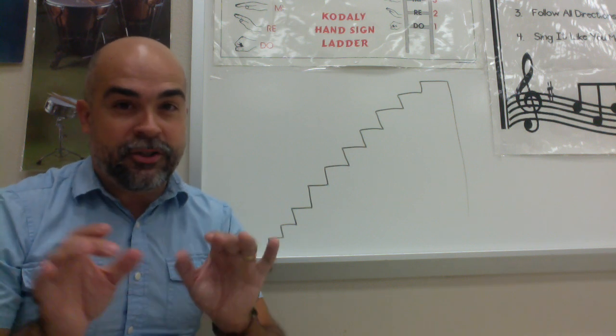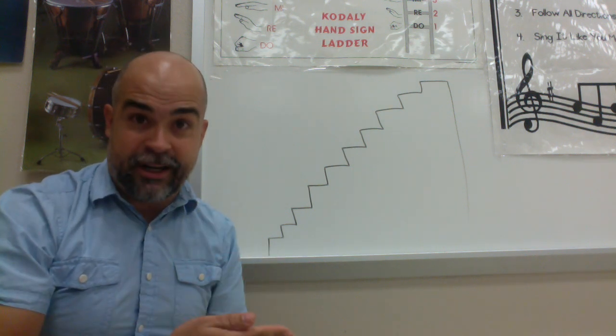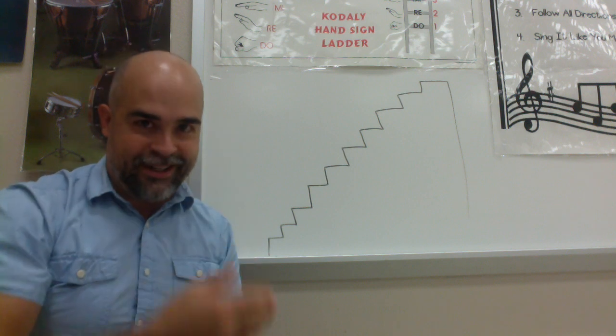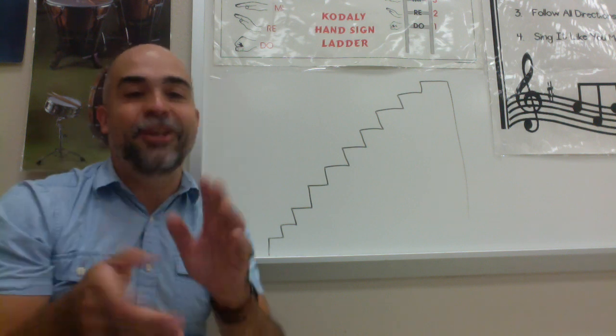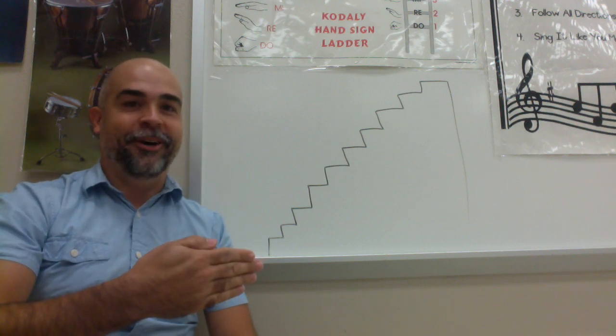Now let's do an exercise with those where we're going to start on one by itself. Then add another one and go back down. Then add another one and go back down. Then add another one. You get it. Okay. Here we go. Starting on low sol again.